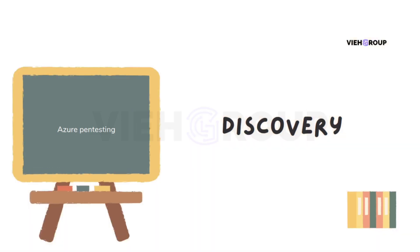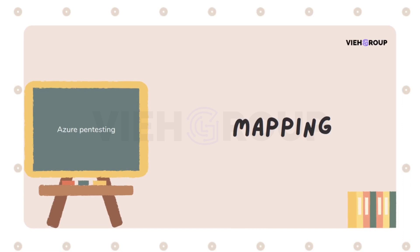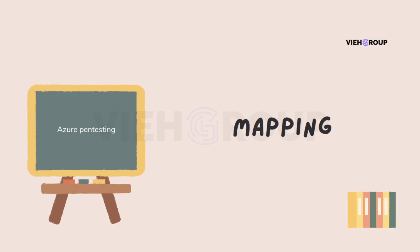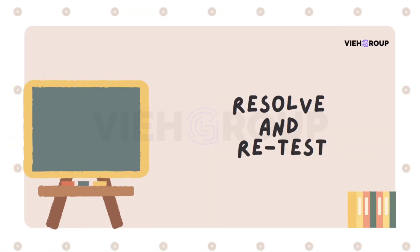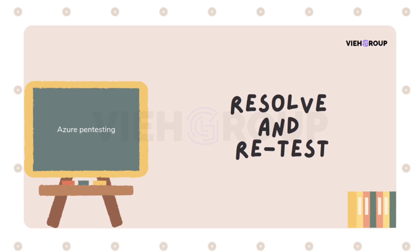The second step is mapping — once you've found the resources, map out the environment, understanding how resources are interconnected and what each one does. Next, look for attacks — use your penetration testing skills to find vulnerabilities in the system and exploit them. After testing is completed, move to reporting: document all the vulnerabilities you have found and how they can be exploited.